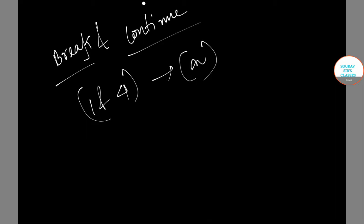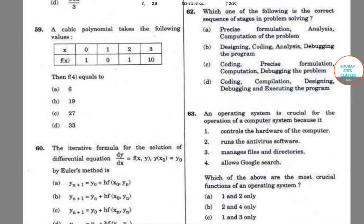Now I will be doing question number 60. So let me read the question out to you. In question number 60 we are asked the iterative formula for the solution of differential equation dy/dx equals f(x,y) and y(x₀) equals y₀ by Euler's method.